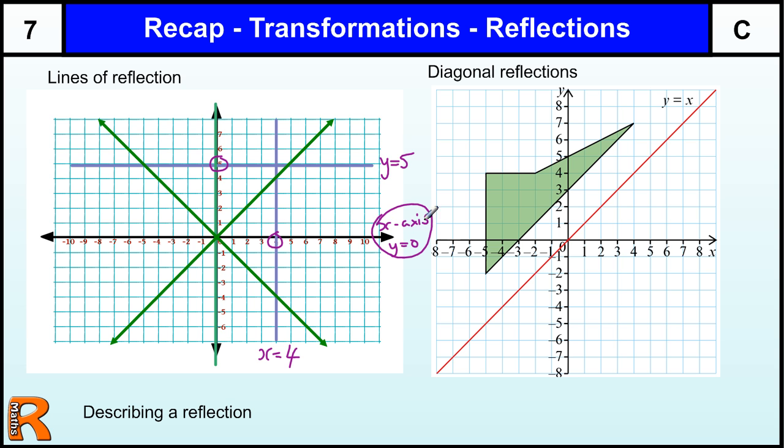A little bit confusing because this is x and this is y, but that's just the way it is. And the same for the y-axis. The vertical line that goes through 0 is x equals 0. So the y-axis is x equals 0.